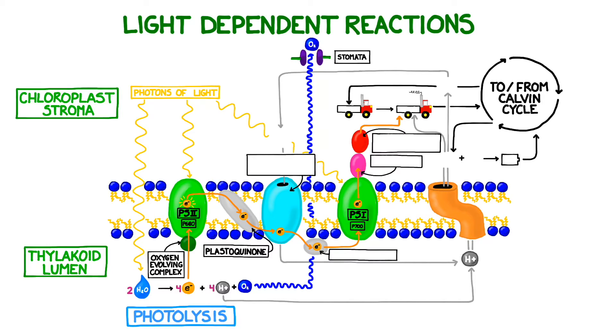First, the electron is transported to a protein called plastoquinone. Plastoquinone works much like a conveyor belt. It delivers the electron to the next protein, cytochrome b6f, then to plastocyanin, and finally to photosystem 1.